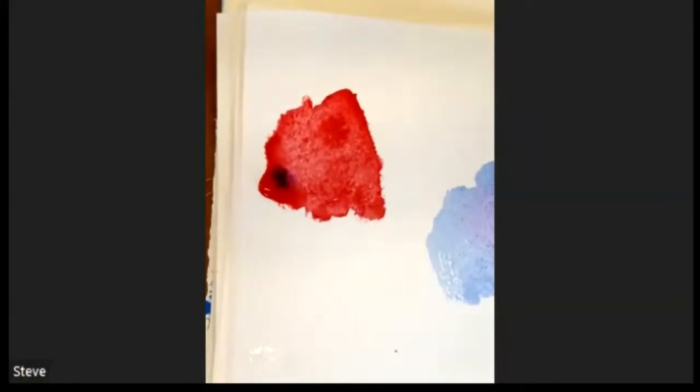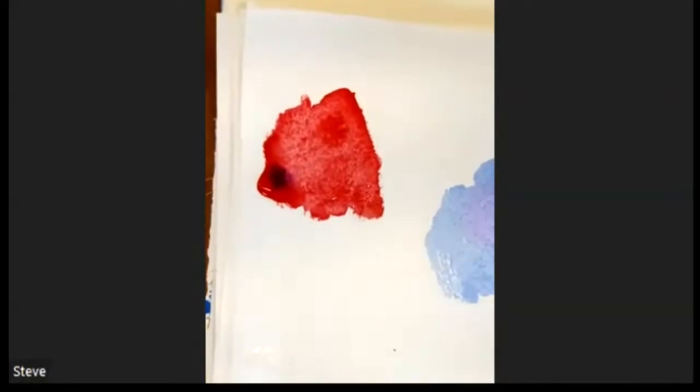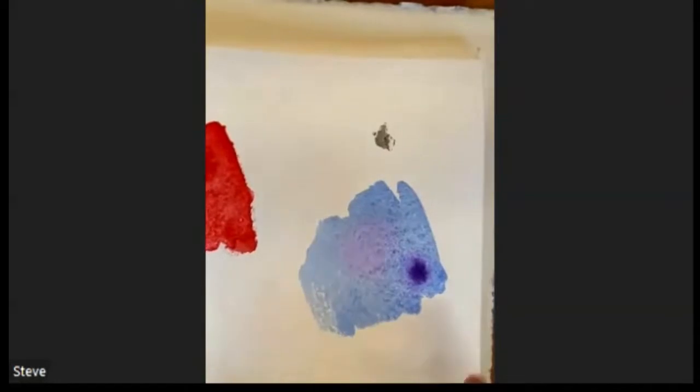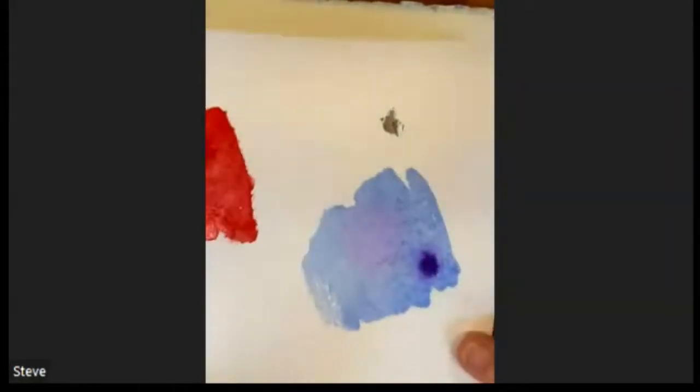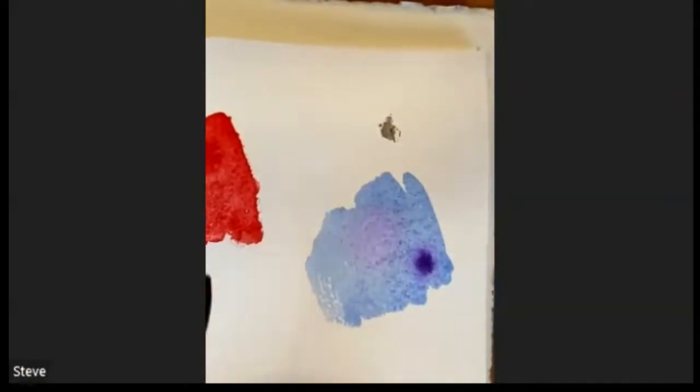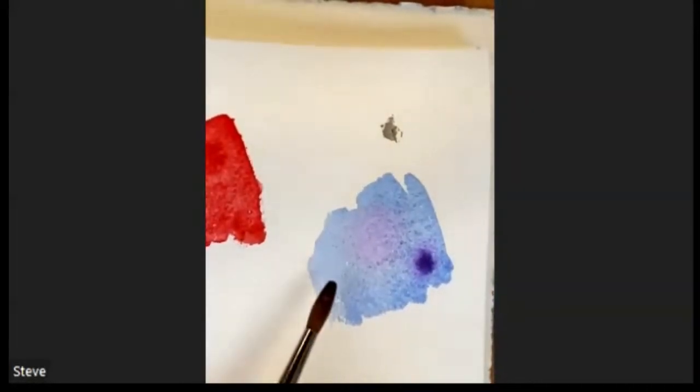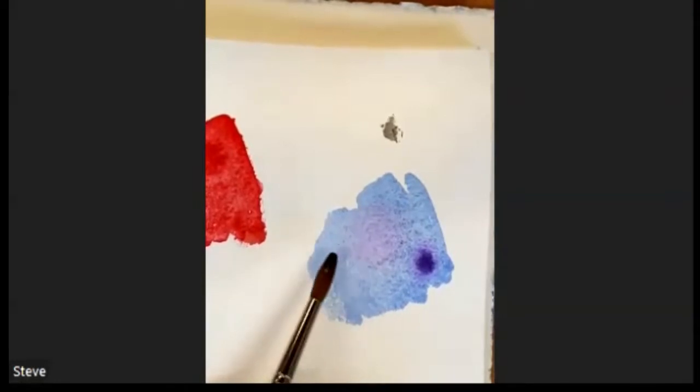So the crucial thing to remember when you're working wet in wet, is you have to have a balance between how wet the paint is that you're working in, and how dry the paint is that you're working in. If we go back to the blue, if I look at it now, the sheen is beginning to go off on the blue there. So look at yours and check it out, and see if you've got an area of paint where the sheen has gone off.